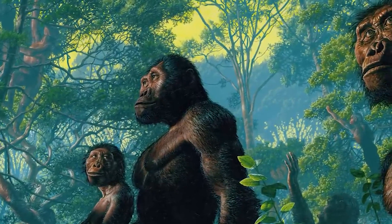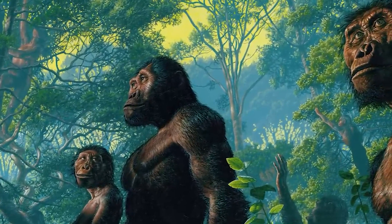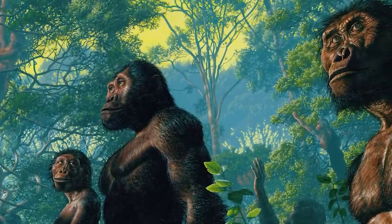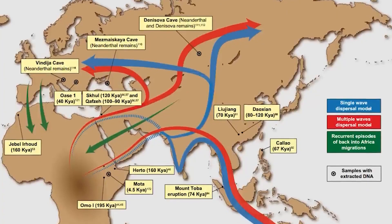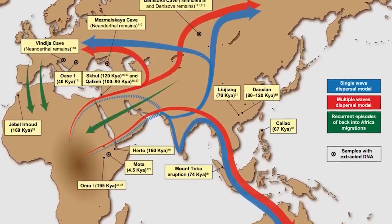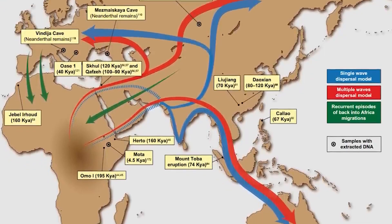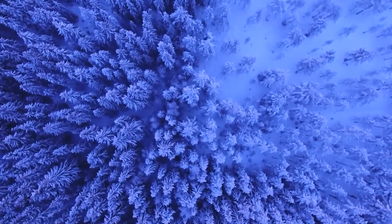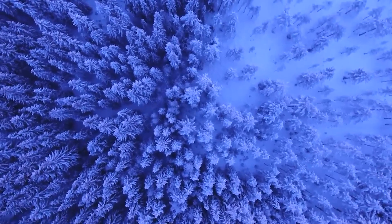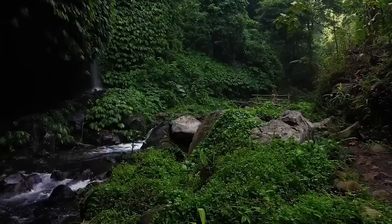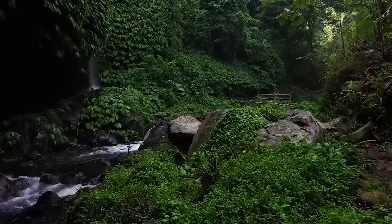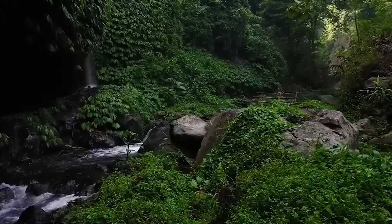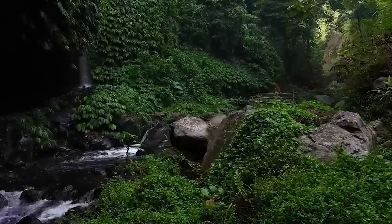According to the theory of evolution, living things are evolving and gaining unique characteristics. These characteristics are formed by genetic variations and mutations. These changes accumulate over time and can eventually lead to the emergence of new species.